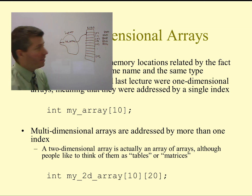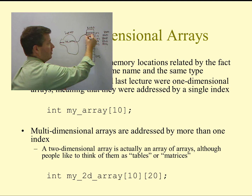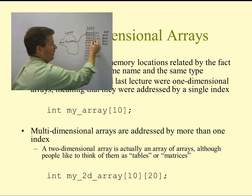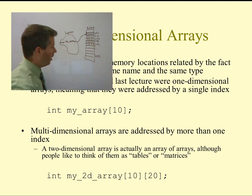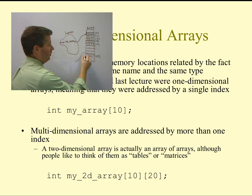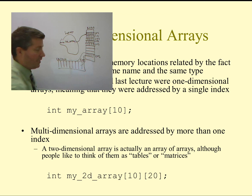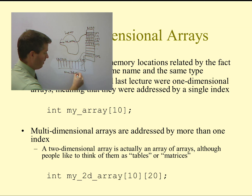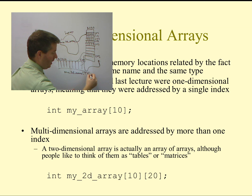Inside of each element of the array, I don't just have an integer, but instead I have another array, and that array has 20 elements inside of it. At index 1, I have another array with 20 elements, and so on. Zooming in on just one of these, what I would see inside is another array indexed from 0, 1, 2, and so on, all the way up to 19. When I access my array, I give it a first index, then a second index, which will represent the specific location within that inner array.